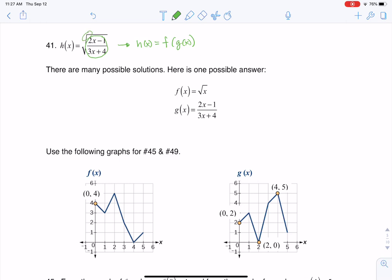And then this radical as the outermost function. So that helps me define g of x and f of x, because whatever's in here is your innermost function, and then you've got your outermost function. So I came up with, well, I'm going to let the radical be the outermost function and the fraction be the innermost function.